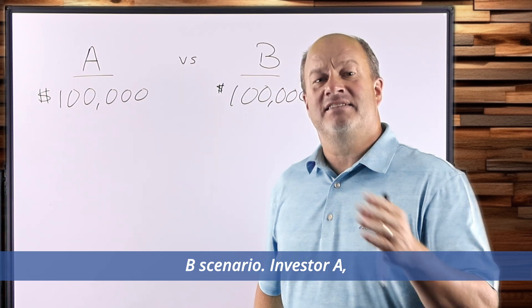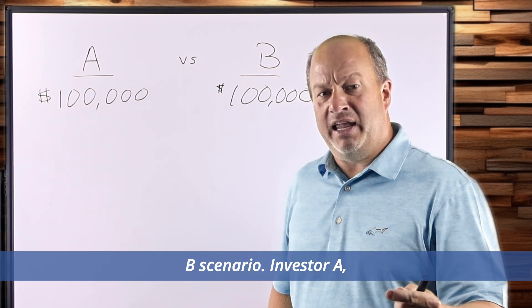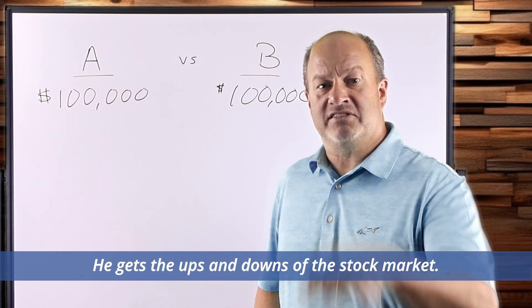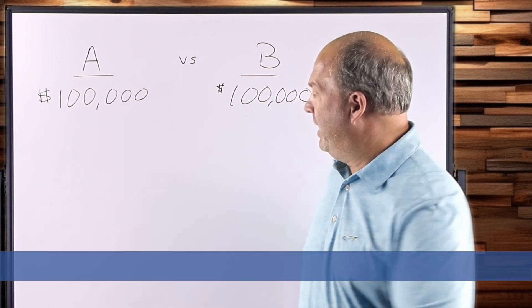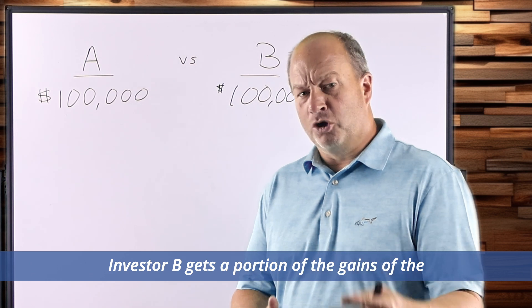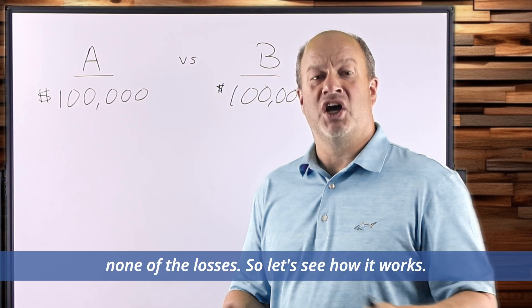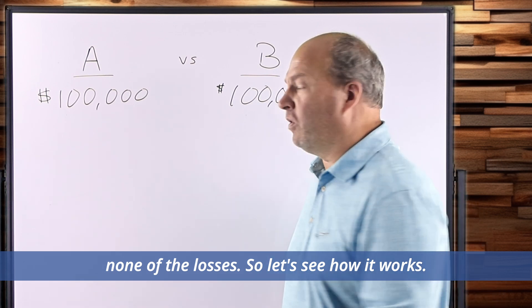An A versus B scenario. Investor A, investor B. Investor A is in the stock market. He gets the ups and downs of the stock market. Investor B gets a portion of the gains of the stock market, gets some of the gains, none of the losses. So let's see how it works.